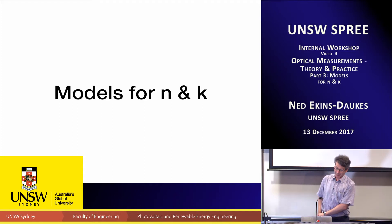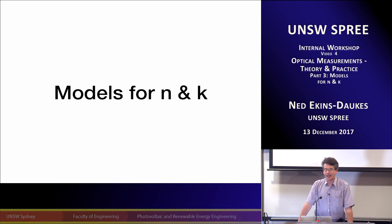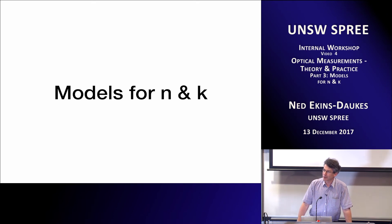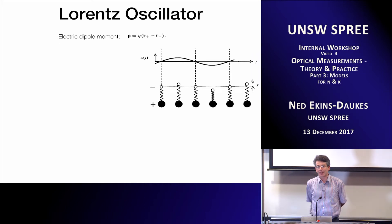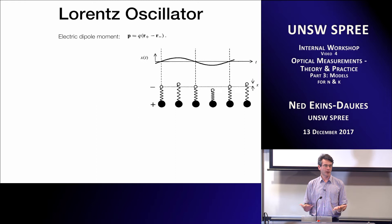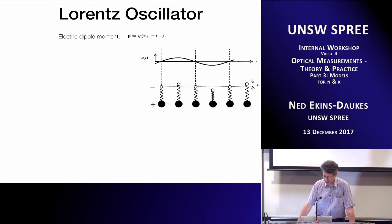Welcome back. We're going to follow on looking at some models for n and k. The aim here — because we could spend all day on this — is just to give you a taste of what you can do with these models and why they might be useful. I'd like to start by introducing the Lorentz oscillator. The reason we're interested in it is to appreciate why we have refractive index in the first place, and there's a basic piece of mathematics which gives us insight into how light behaves when it propagates through anything that might absorb it.